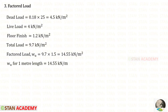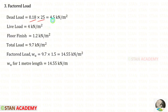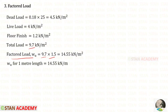Now we find the factored load. First the dead load: overall depth D = 0.18 m × 25 kN/m³ = 4.5 kN/m². Adding live load 4 kN/m² and floor finish 1.2 kN/m², total load = 9.7 kN/m². Factored load = 9.7 × 1.5 = 14.55 kN/m². For a 1 meter width, the factored load is 14.55 kN/m.